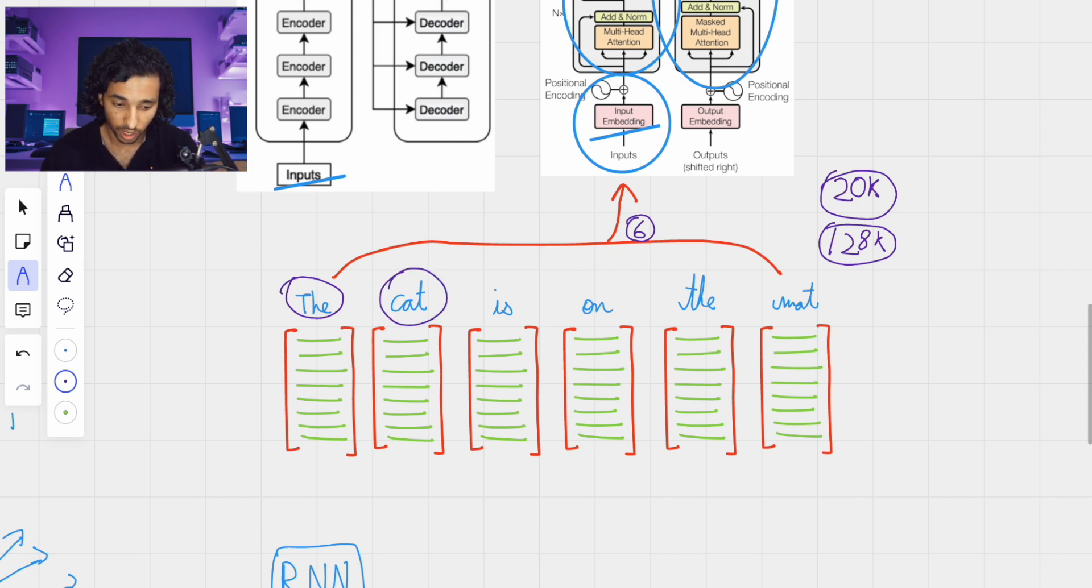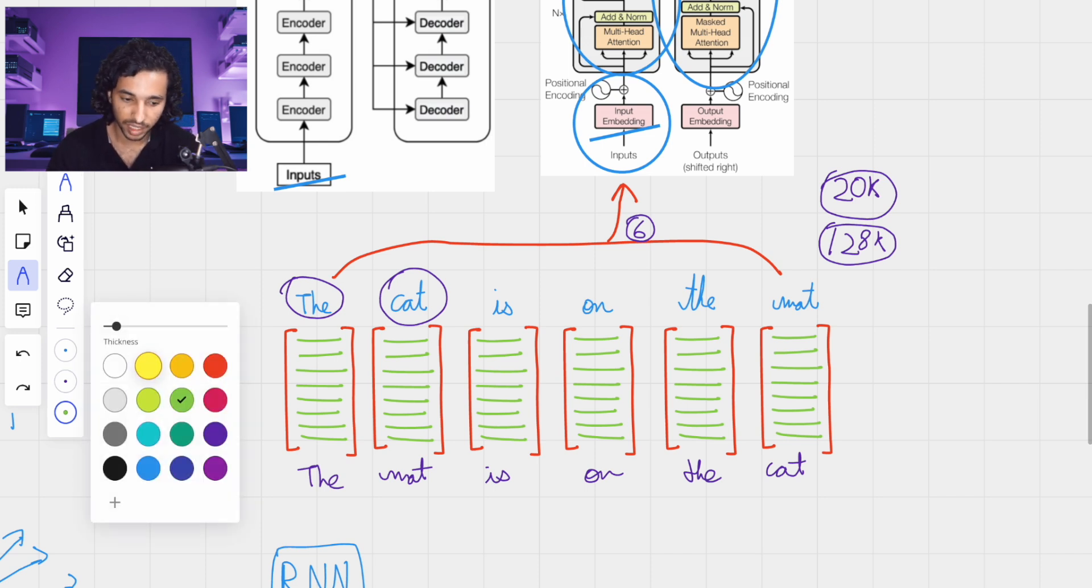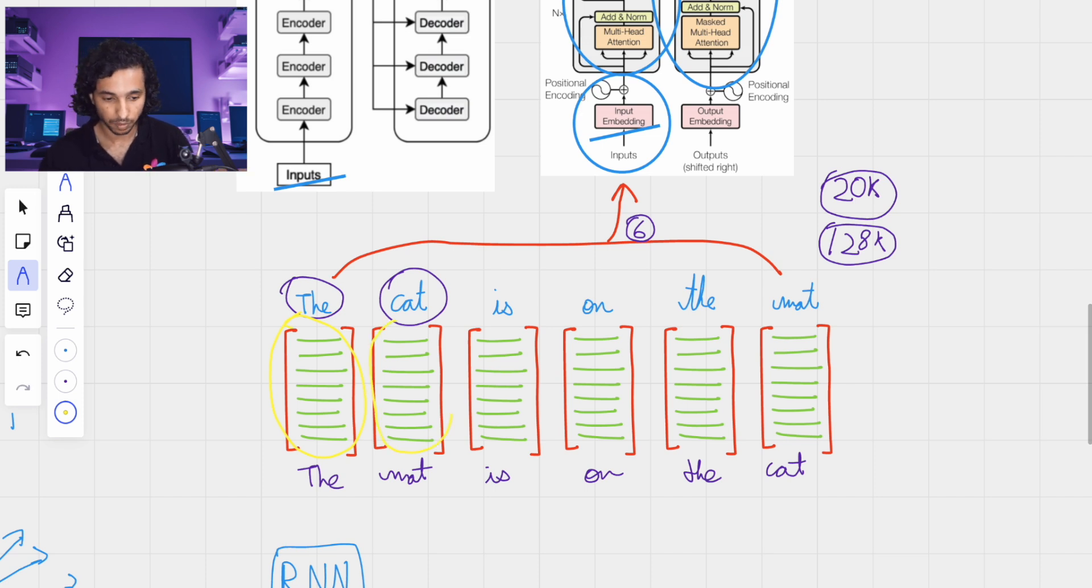What is the difference between the cat is on the mat or the mat is on the cat? Because in the end, we are just giving the representations of these words or these tokens. And the representation for the word the is the same for both of these cases. But there is no specific order we are giving this in. So this is why we need some kind of a positional embedding for this.